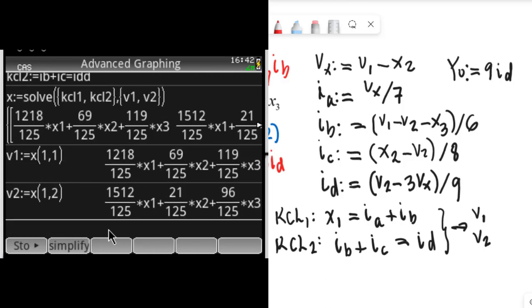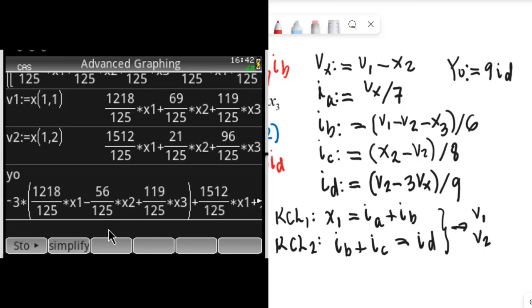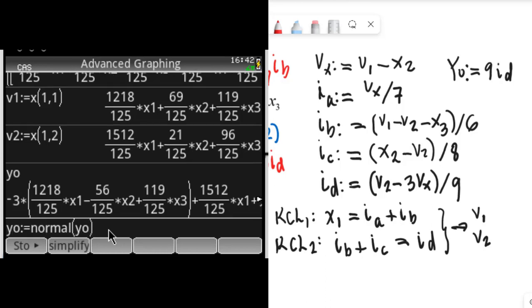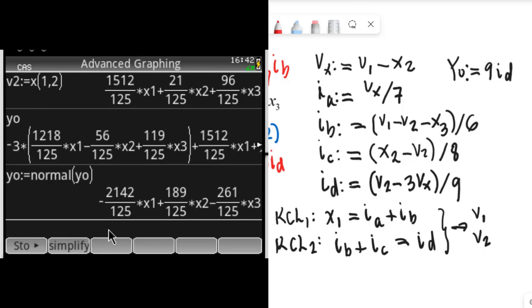From there we extract V1 and we extract V2, which of course come out as functions of X1, X2, X3, the three inputs. Now we can find anything. Now we can find Y0, the output. Let me simplify that. The output as predicted is a linear combination of the three inputs.